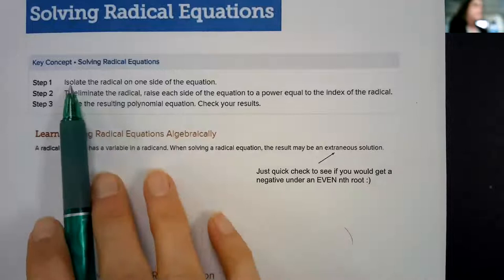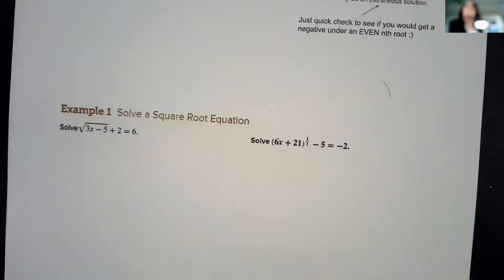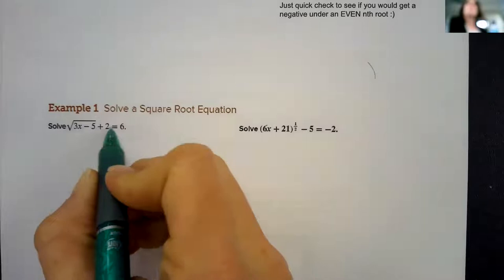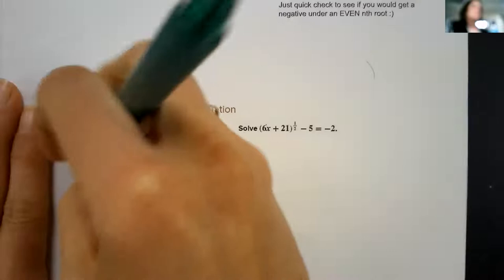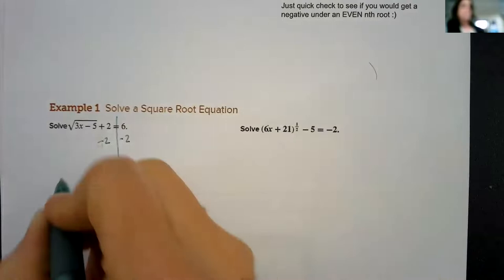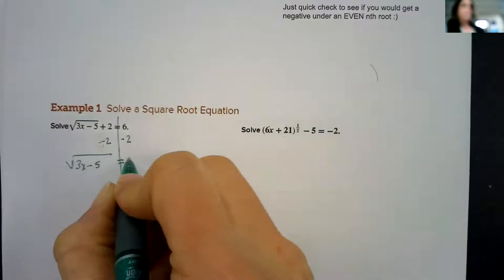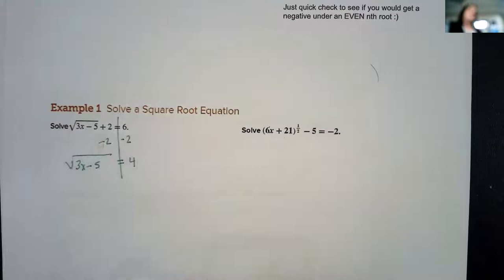What does that mean? Let's go through these steps on this first example problem. We need to isolate this radical. This plus two is not underneath the radical, so when we go to isolate it, we would subtract that two to the other side. So then we would have the square root of 3x minus 5 equals 4. Now that's isolated. The radical is by itself on the left side of the equation.